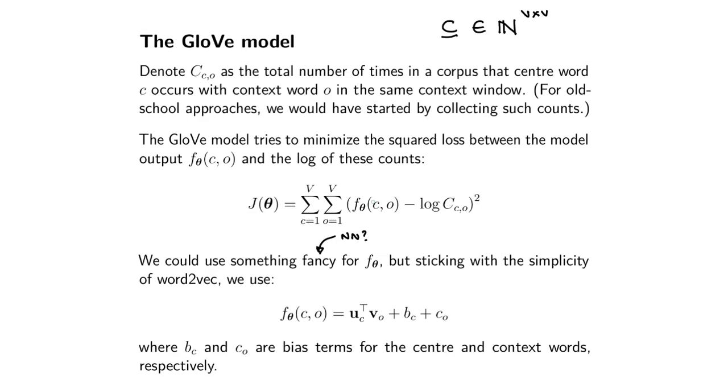The bias terms can just capture that this word just occurs a lot, so I just need to in general push up this value. And then the dot product basically tells you about the interaction between the context word and the center word.